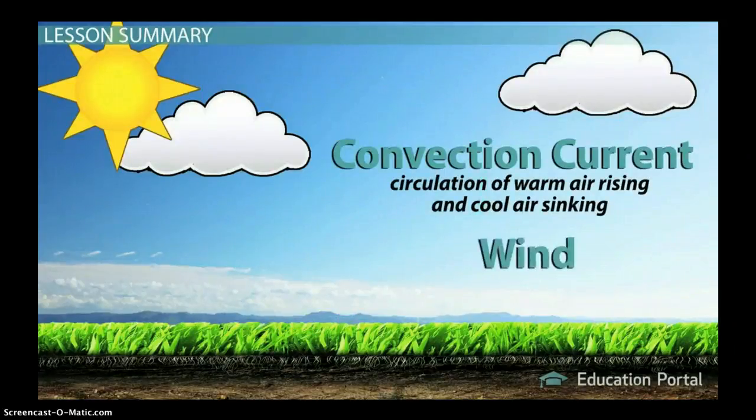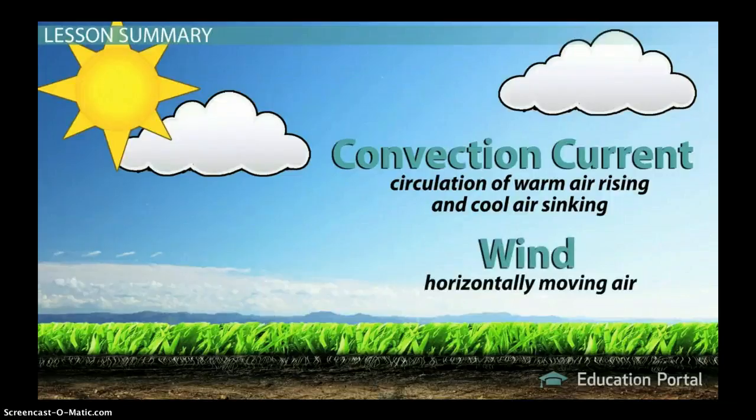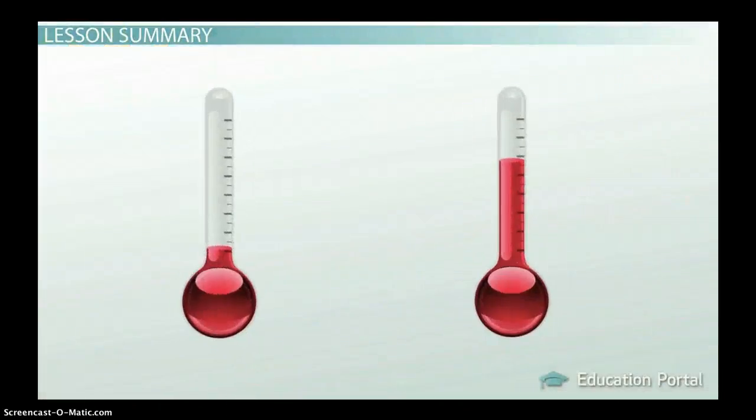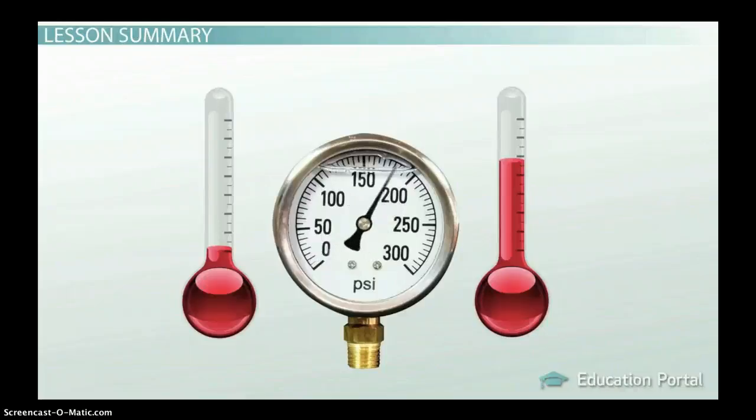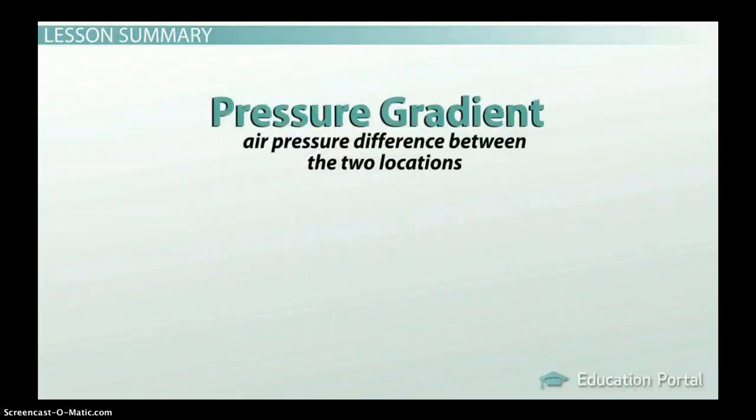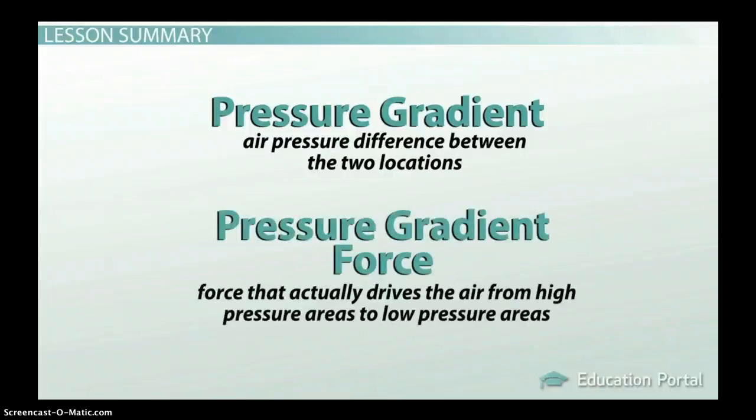Convection currents create wind, which is horizontally moving air, but convection currents are ultimately at the mercy of temperature differences, because these are what create pressure differences in the first place. The pressure difference between two locations is called a pressure gradient, and the force that actually moves air as wind is called the pressure gradient force.